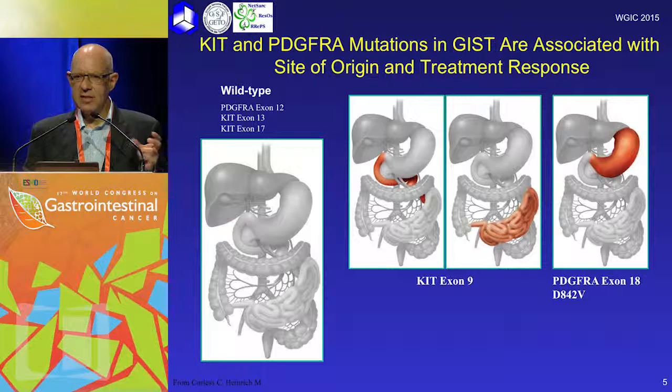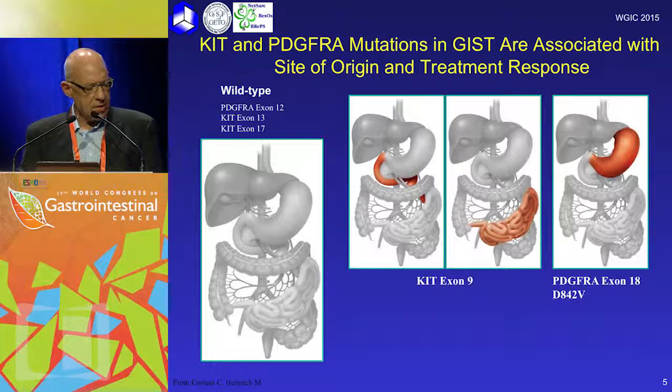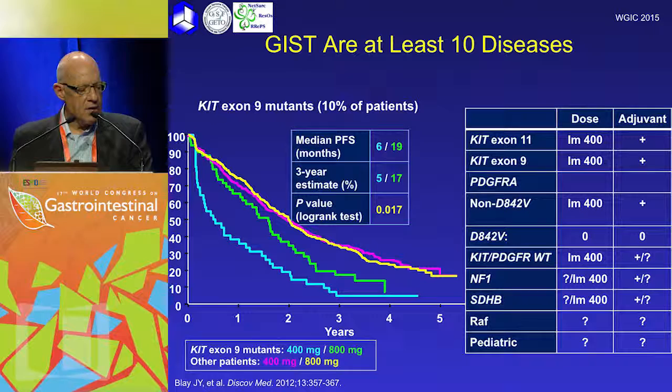It's worth remembering that these mutations somehow relate to the location of the tumours. These tumours can occur anywhere in the GI tract, although the commonest is the stomach. In the stomach, you most often see exon 11 tumours. In the jejunum and small bowel, exon 9. PDGF receptor alpha exon 18 are more common in the stomach as well, and wild type can occur anywhere. None of these are absolute — the location has some relative impact rather than absolute.